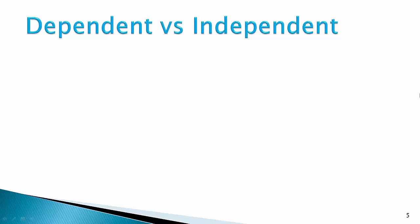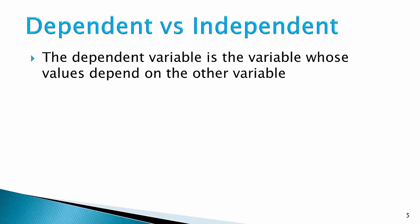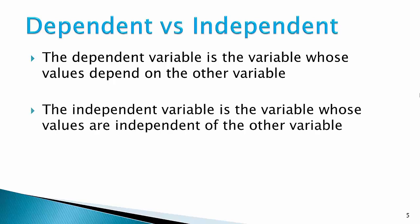I'd like to now talk about the distinction between the dependent and independent variable. The dependent variable is a variable whose values depend on the other variable. In contrast, the independent variable is a variable whose values are independent or do not depend on the other variable. As a researcher, you will have to think of the logic behind the relationship you're testing, and see which variable is likely to depend on the other, and which variable moves independently of the other.